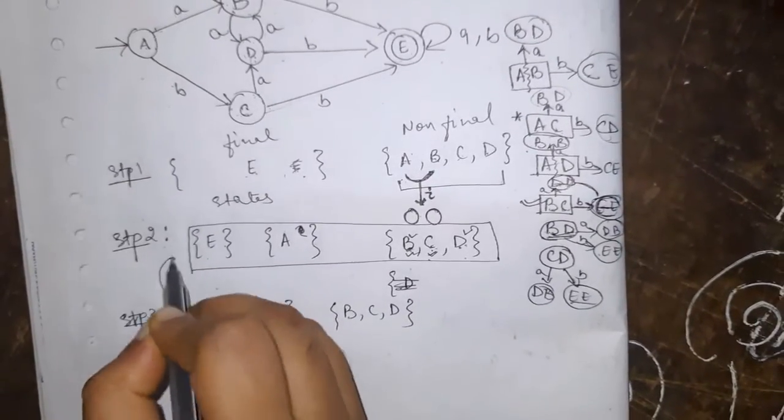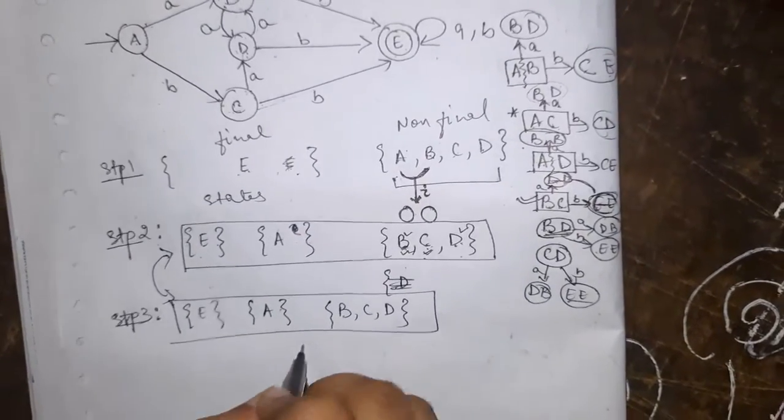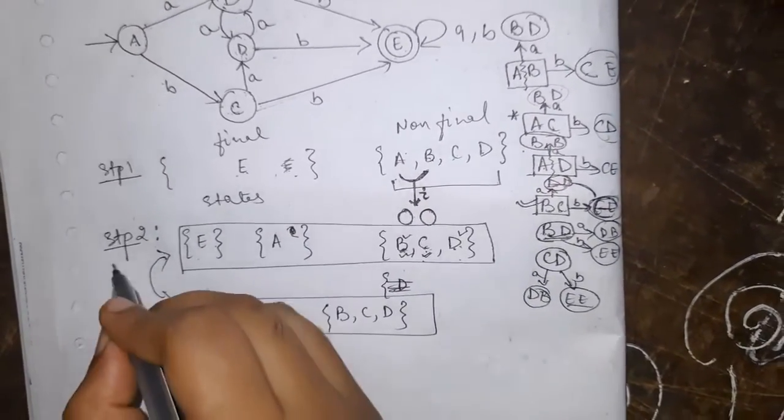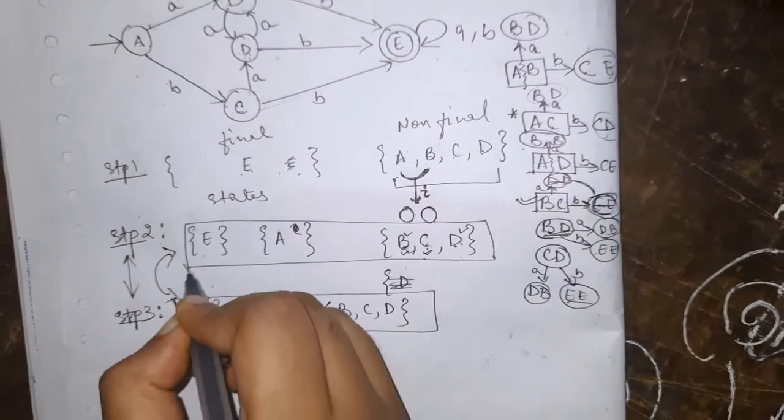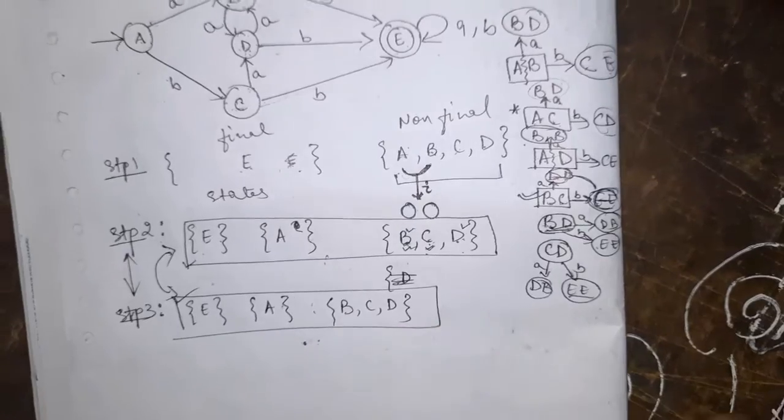Do we have any difference between these two partitions? No. Therefore we will stop. The stopping criteria is if in the two steps we have same partition, no new groups are formed. Then we shall stop.